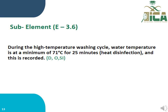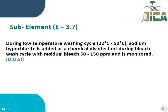E3.6: During the high temperature washing cycle, water temperature is a minimum of 71 degrees centigrade for 25 minutes, and this is recorded, evaluated by documents, observation, and interview. E3.7: During the low temperature washing cycle (22 to 50 degrees centigrade), sodium hypochlorite is added as a chemical disinfectant during the bleach washing cycle, with residual bleach of 50 to 150 ppm, monitored and evaluated by documents, observation, and review.